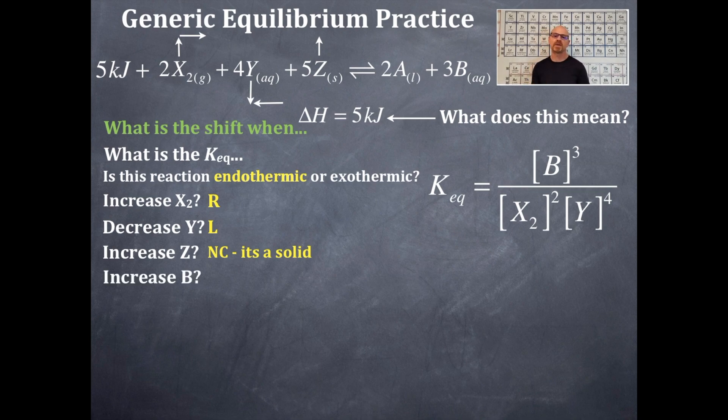So how about if we increase B? Now B this time is on the product side. We have too much B, so we're going to shift away from the B, and shifting away from the B is going to the left. Now we're going to decrease B. If you decrease B, it's also on the product side. I need to make more of it. How do I make more B? Go towards the products. That's a shift to the right.